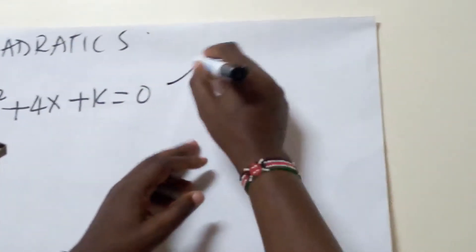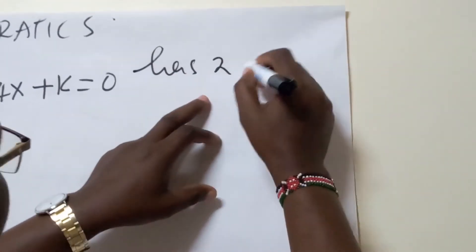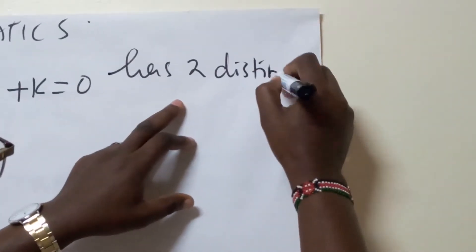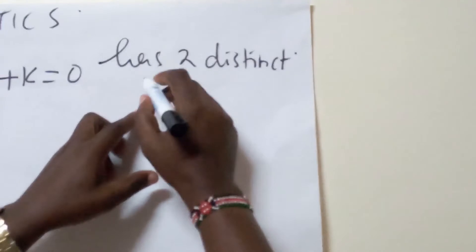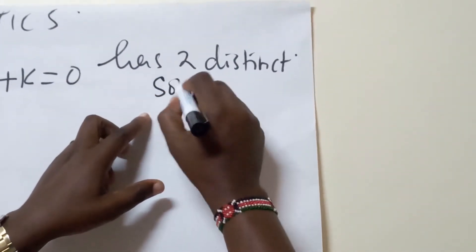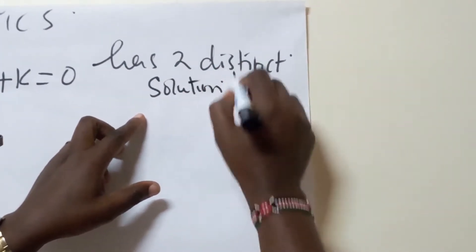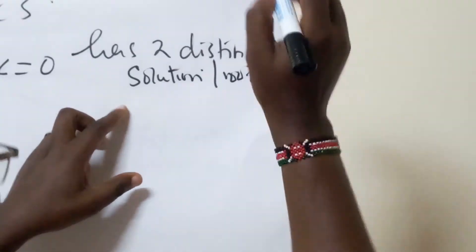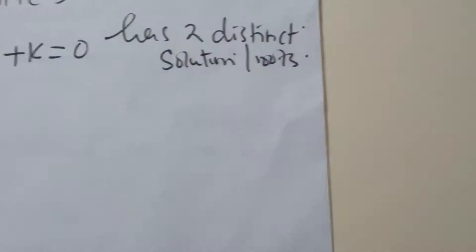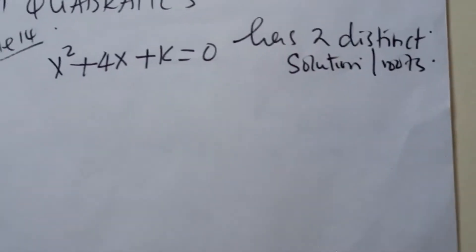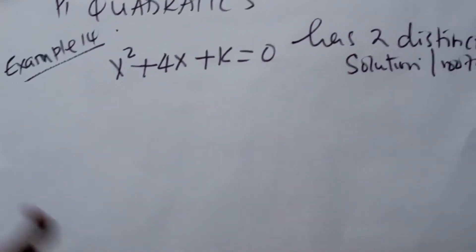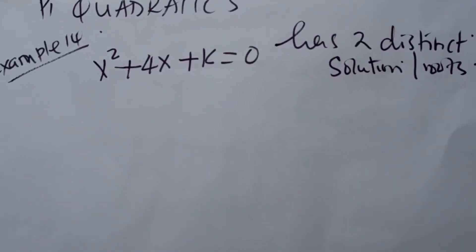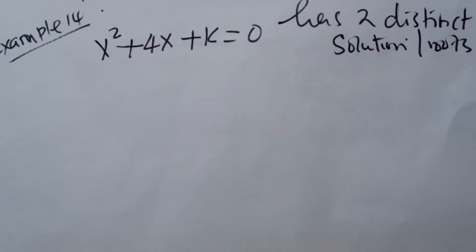The condition is has two distinct, clear, meaning clear, has two clear solutions or roots for that matter. And the nature of the discriminant will determine when we have two distinct roots.